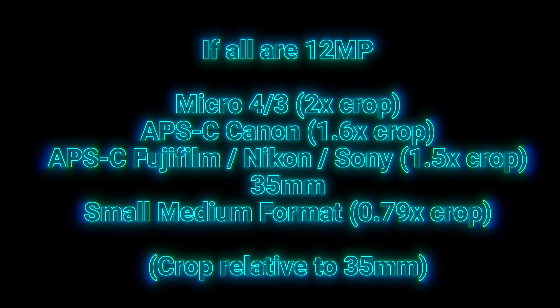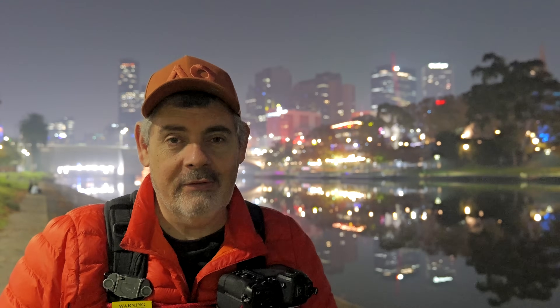It is pretty much accepted that the smaller the sensor, the worse the noise gets. So if you have a Micro Four Thirds 12 megapixel sensor, an APS-C 12 megapixel sensor, a 35mm 12 megapixel sensor, and a small medium format 12 megapixel sensor — if all are made with exactly the same technology, the small medium format, which has the largest photo sites, should be best at collecting light. That's how it works. Even on the same ISOs, depending on sensor size, you might get different results.